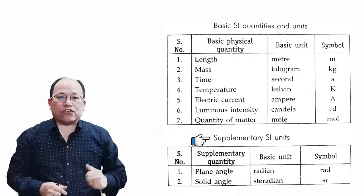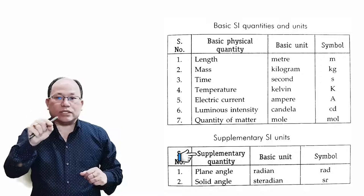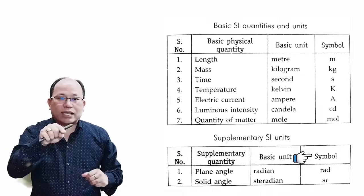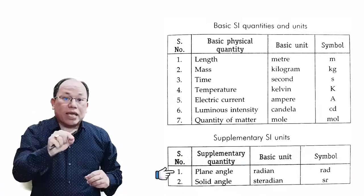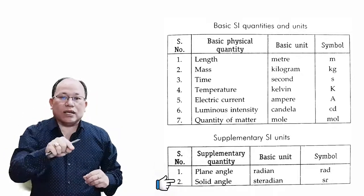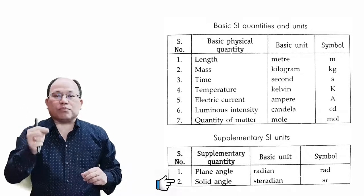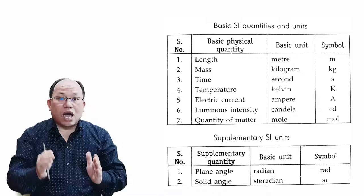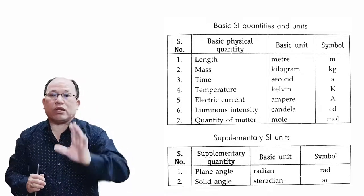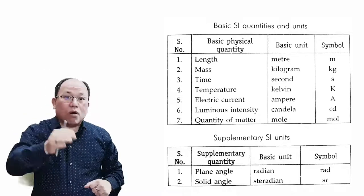Next, come to the supplementary quantities table. The columns are serial number, supplementary quantities, basic units, and symbol. First: plane angle — unit is radian — symbol rad. Second: solid angle — unit is steradian — symbol Sr. These are the very important physical quantities, that is fundamental quantities, along with their symbols and units. This is the first part of physics study.